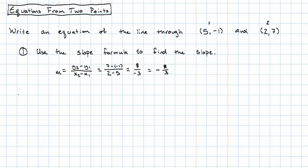Okay. And now this is the trickiest part because it's something that we get to choose. We can choose either point to write down the equation. I'm going to choose point number 1, and so y minus my given y was negative 1 equals the slope we found was negative 8 thirds times x minus our given x was 5.